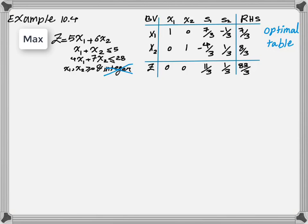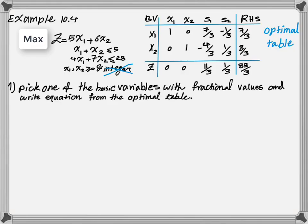To solve this problem using the cutting plane method, we first have to find variables that are not integer in the right-hand side. Then we pick one of the basic variables with fractional values and write the equation from the optimal table. In this case, if you look at the optimal table, you have two variables with fractional values — both x1 and x2 have fractional values. Let's choose one arbitrarily. The number of iterations to reach the final integer solution may vary depending on which variable you choose, so let's choose the first variable and write the equation for that row.